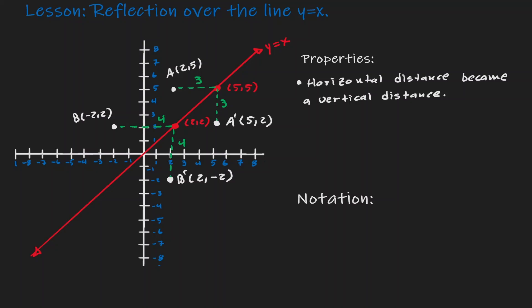There's a big relationship we can discuss now that we have done two examples. Going back to point A, notice that the original coordinate point was 2 comma 5, and for the image we got 5 comma 2. The x value of the pre-image is the y value of the image, and the y value of the pre-image is the x value of the image. We have that same relationship in point B. When we reflect over the line y equals x, the x and y values switch locations.